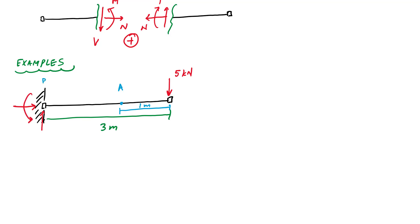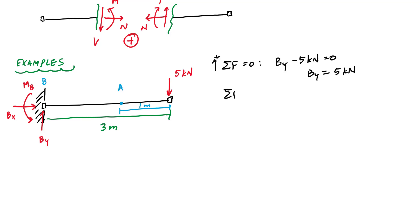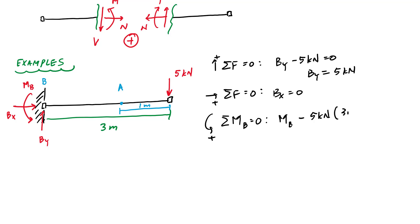I'll call this point B. To find the support reactions I apply equilibrium equations: BY is five kilonewtons. The sum of forces in the horizontal tells me BX is zero. Taking moments about point B: MB minus five kilonewtons times three meters equals zero, giving MB equals 15 kilonewton-meters.